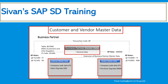Here we can see the Business Partner transaction code BP. This can be created with the general data first, and then extended to either customer master data or vendor master data. The key table in S4HANA is BUT000, while KNA1 is for customer and LFA1 is for the supplier. The transaction code SE16N can be used to view these tables.